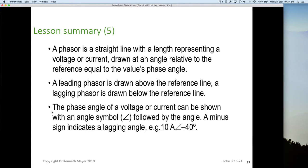The phase angle of a voltage or current can be shown with an angle symbol followed by the angle. A minus sign indicates a lagging angle, so 10 amps angle minus 40 means it's lagging. But quite often we'll write 10 amps 40 degrees lag. Sometimes we use a minus sign, sometimes I'll draw a plus sign in front to indicate it's leading, or write the word lead behind it. So here we end lesson 2 part 3. I hope you've enjoyed all the parts of lesson 3.